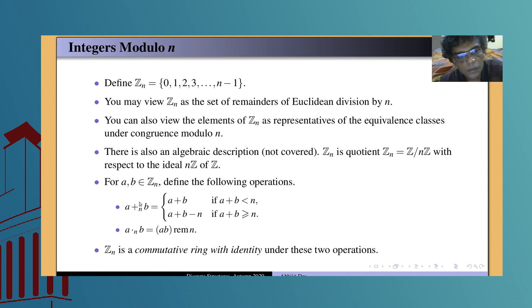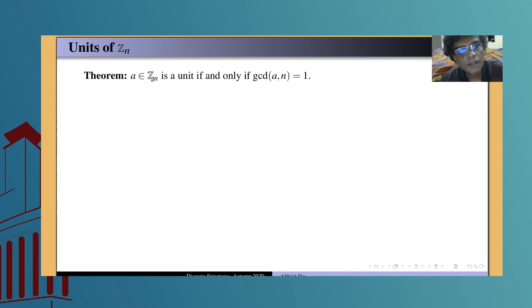Henceforth, I will no longer use the plus-subscript-n or dot-subscript-n notation; instead I will always use the congruence notation. This is a commutative ring with identity, and in any such ring we can talk about the units. I now prove a very important theorem that characterizes all units of Z_n: an element a in Z_n is a unit if and only if it is co-prime to the modulus n.